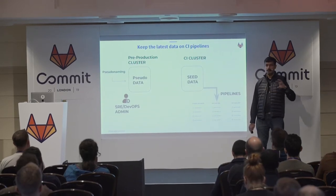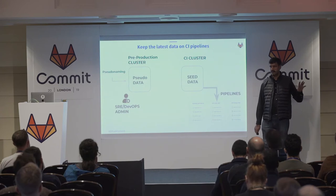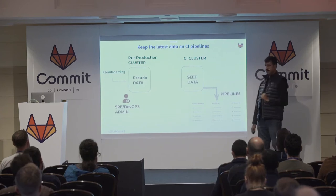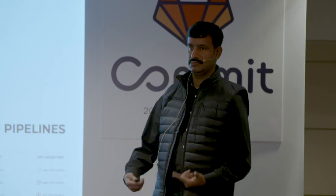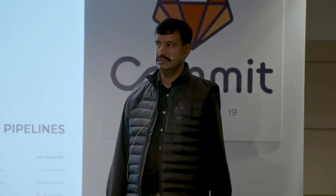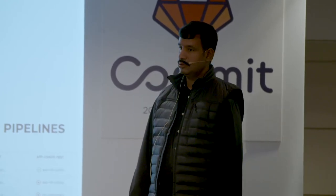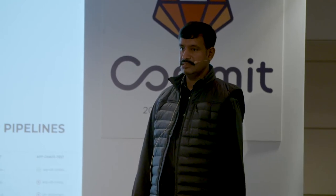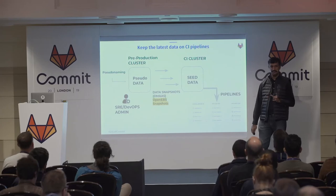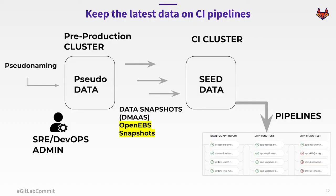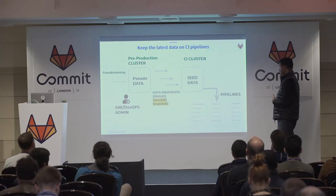On Kubernetes, the challenge is how do you really get this data from pre-prod to your GitLab CI cluster? Not only get it once, you need to keep getting it again and again, and you don't want to be spending any time getting it — you want to automate it. Get it now, get it next week, or get it daily if your data is changing so fast. OpenEBS has a feature called Data Migration as a Service, where you take the snapshot of the data and then move it onto your CI cluster so your pipeline runs on that data.